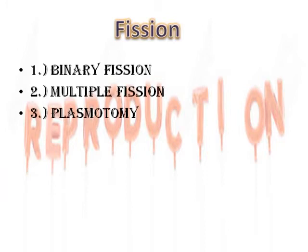Now I will talk about a form of asexual reproduction, i.e. fission. It is of three types as listed.